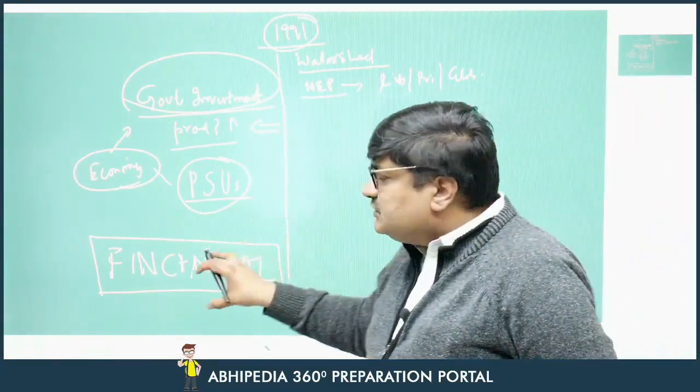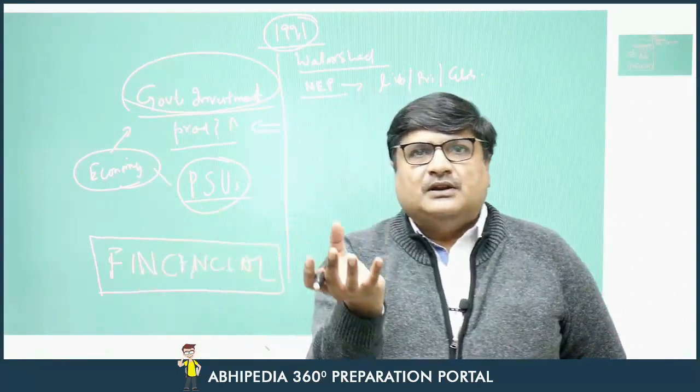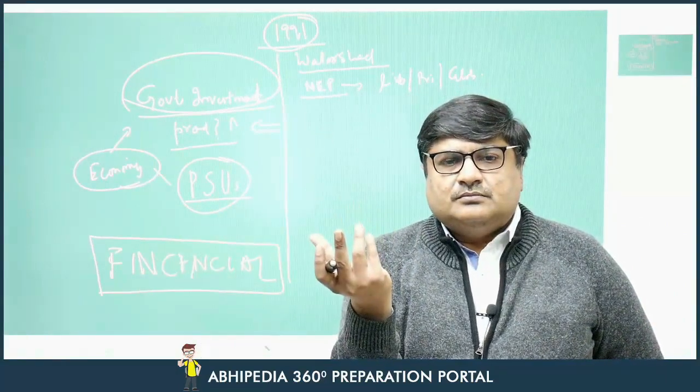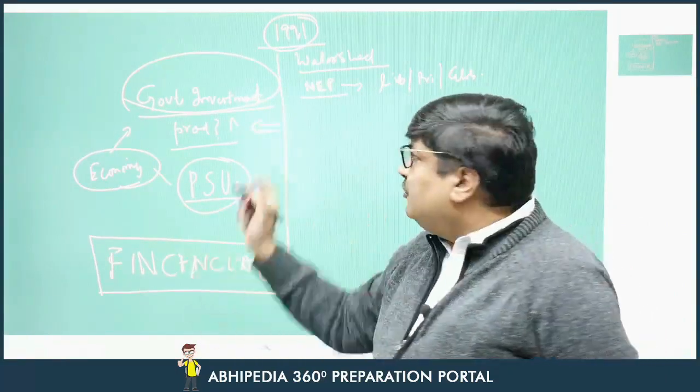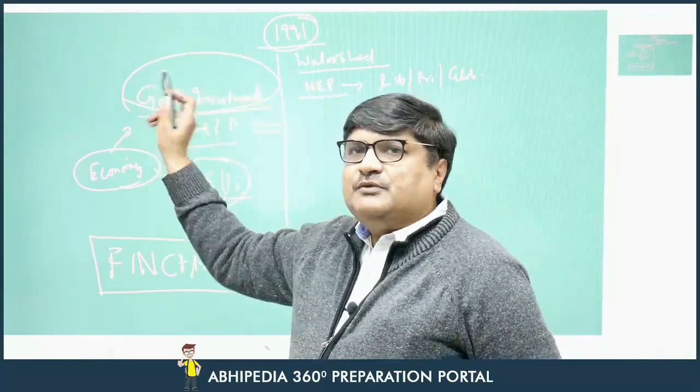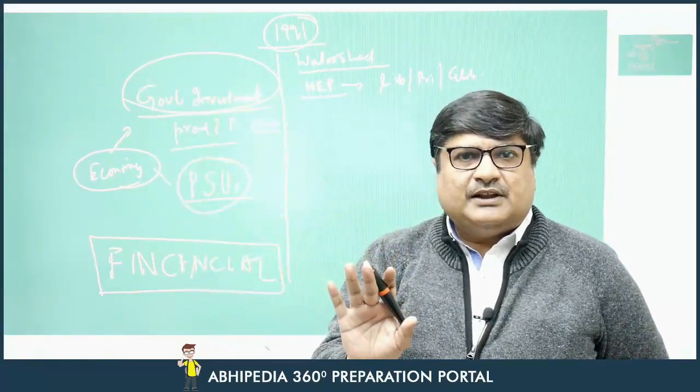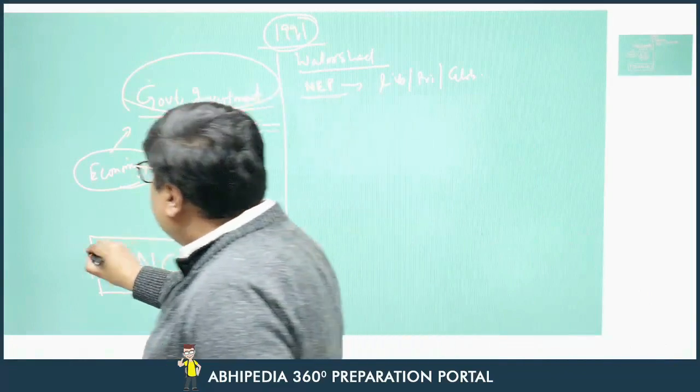It is the financial system which basically makes money available. To whom? Now before 1991, it was the government which required the maximum amount of money. So the whole money was flowing towards the government.